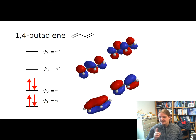And you're going to notice this trend. Every one of the highest energy pi orbitals is going to have a node in between every carbon atom. Every one of the lowest energy orbitals is going to have no nodes in between carbon atoms.